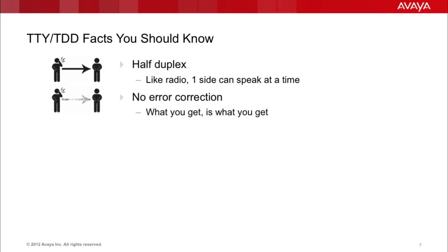There is no error correction in this protocol, so what you get is what you get. Because of this, it's possible to enter the transmission midway, which will cause a partial message to be received, or a shift character to be missed, which will cause garbage to appear on the screen. We'll talk more about shift characters a little later on.